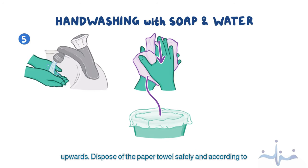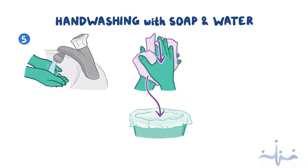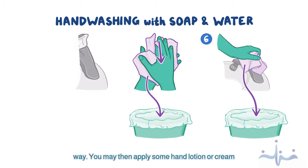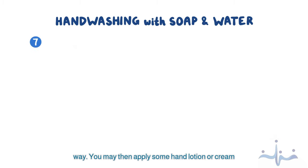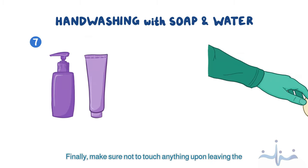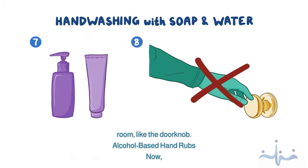Dispose of the paper towel safely and according to your facility's policy. Then grab another clean paper towel to turn the tap off and discard it in the same way. You may then apply some hand lotion or cream to prevent your hands from drying out. Finally, make sure not to touch anything upon leaving the room, like the doorknob.